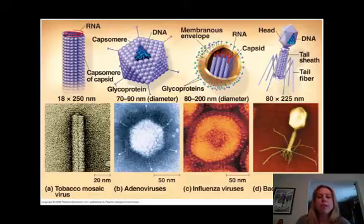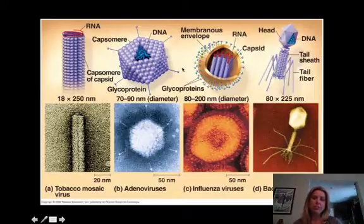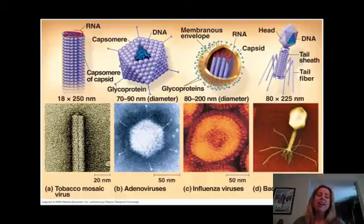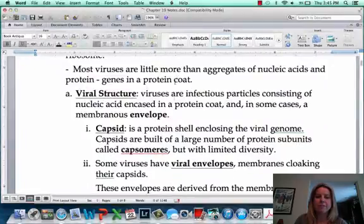One thing that you might notice about this one is it also has that yellow you see here, and that's going to be the envelope. Some viruses are going to have an envelope, and that kind of helps them do a stealth attack where they may not be identified when they're doing stuff like that. So those are going to be the basic parts of a virus.